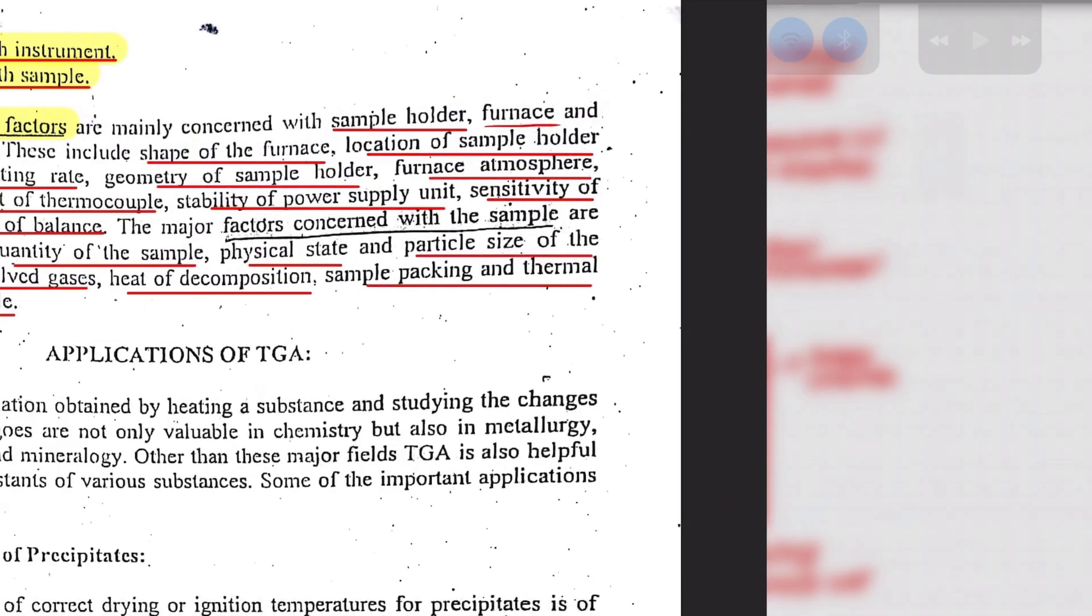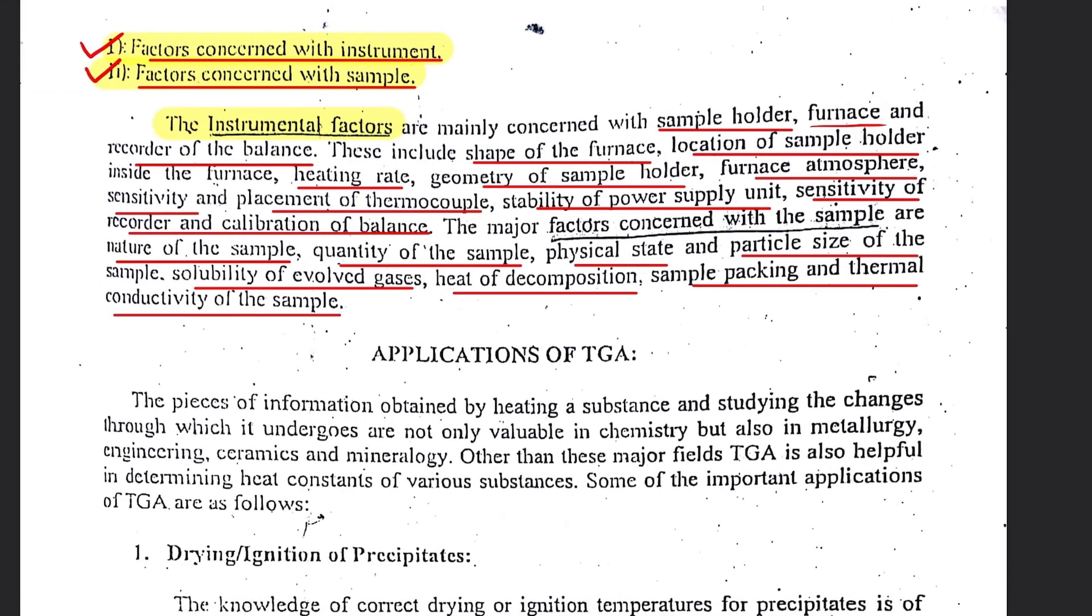However, apart from this robust information, there are two types of factors that can create variation in the readings of a particular single sample. One type is factors concerned with the instrument and the second type is factors concerned with the sample.